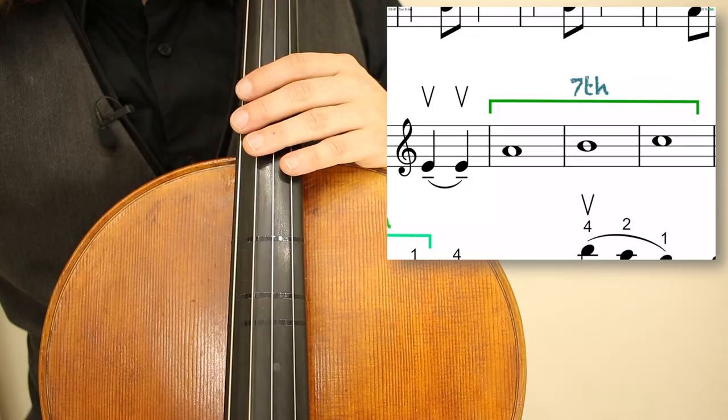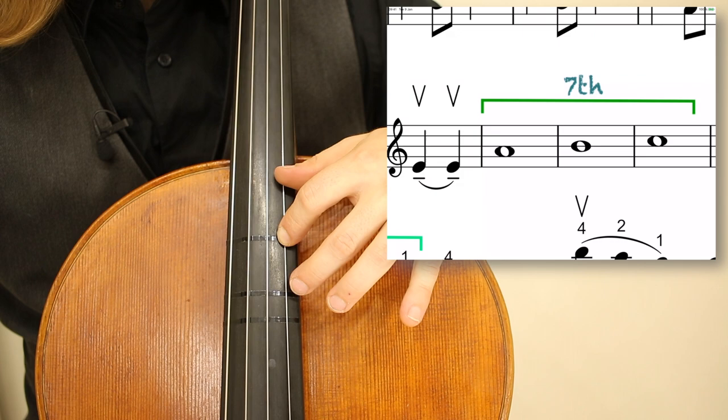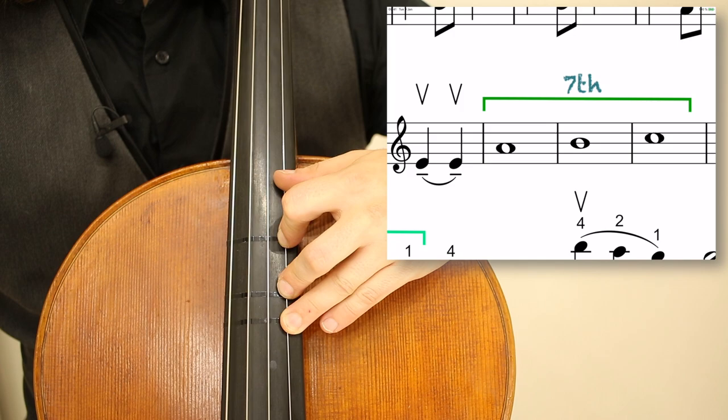The third beat of 88 brings us to the seventh position. It is the harmonic A, B natural, C natural we have written in the treble clef.